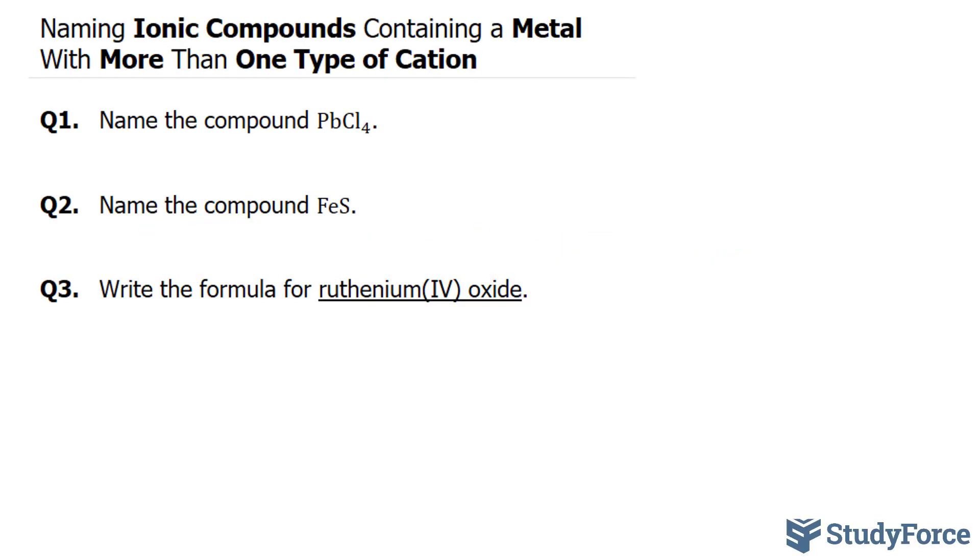In this lesson, I'll show you how to name ionic compounds containing a metal with more than one type of cation. Let's start with question one.